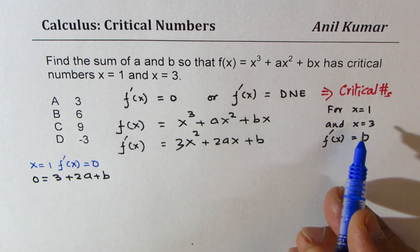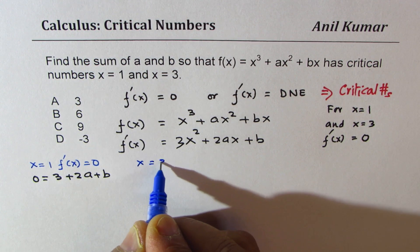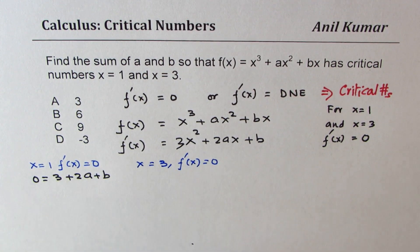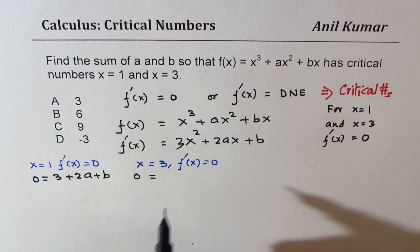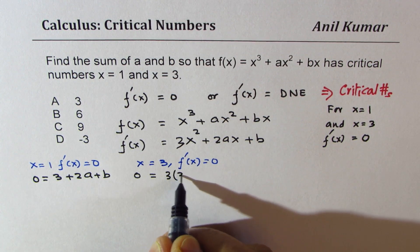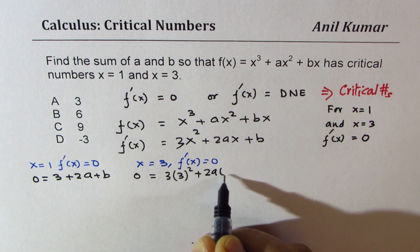3 squared is 9, so let me write here 3 squared plus 2a times 3 plus b, which is 27 plus 6a plus b. So this becomes our second equation.